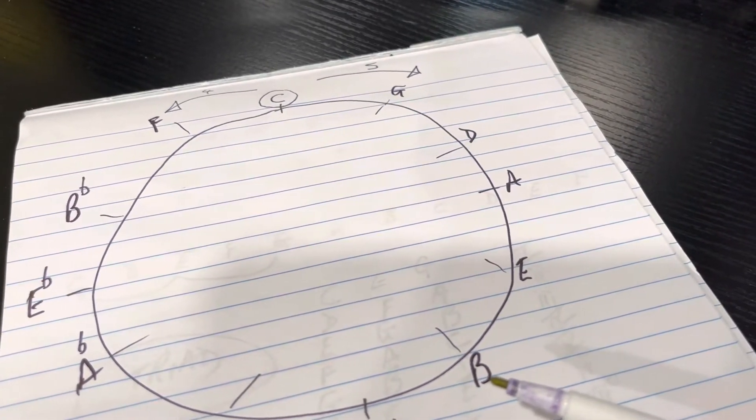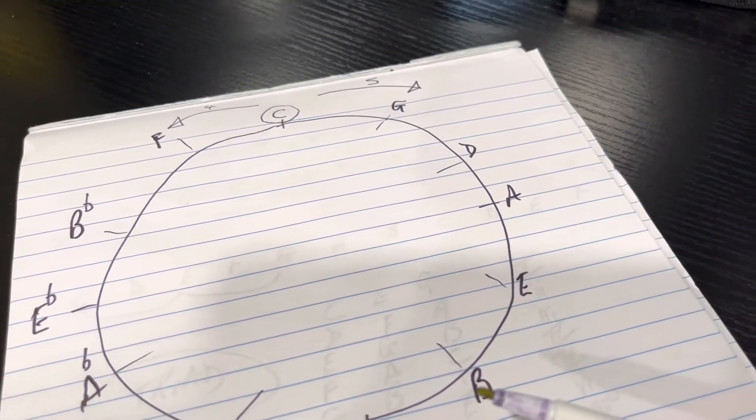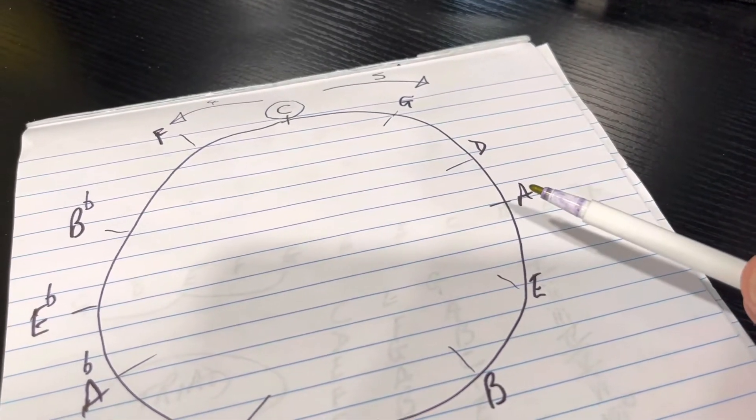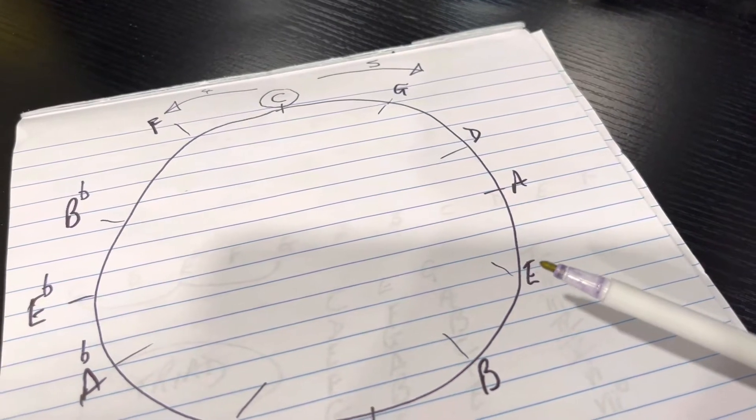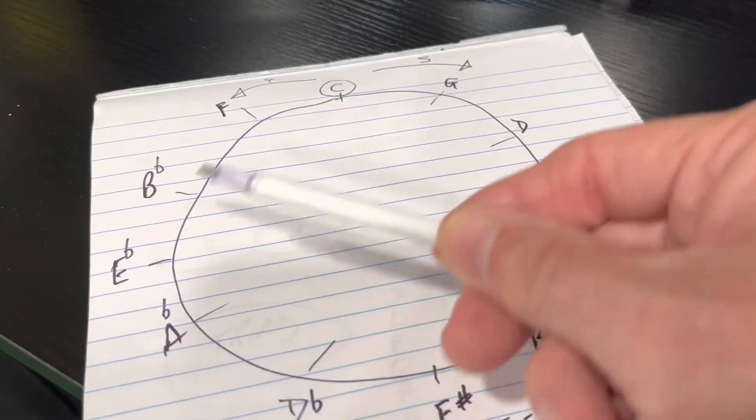So in the key of E, A major, E major, and B major are the major chords. A is what we call the four chord, E is the one or the root chord, and B is the five. And that remains the same all the way around the circle.